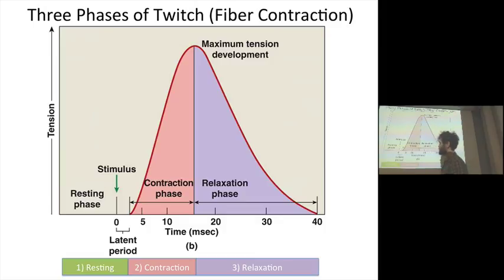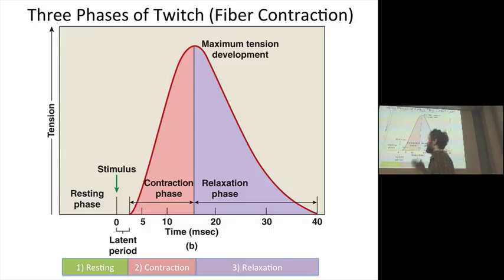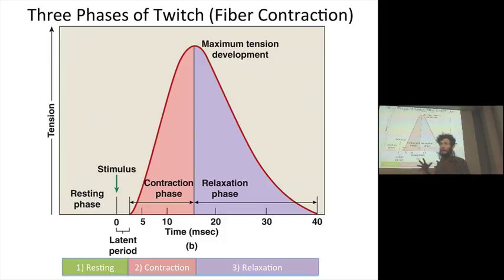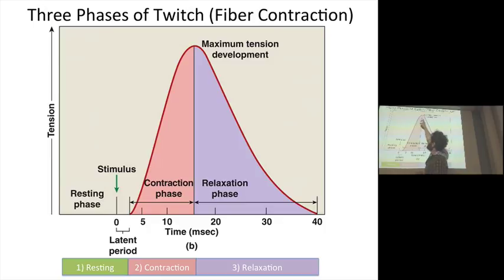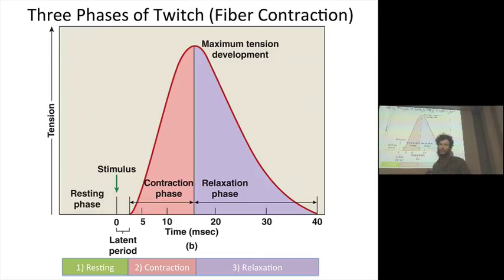Then we go into the contraction phase: cross-bridge formation, contraction cycle, release, again and again, until the neural stimulus has abated, the acetylcholine has been recycled, membrane potential dynamics reset themselves, and consequently the calcium channels close in the sarcoplasmic reticulum. We enter the relaxation phase. We reach a maximum tension, then shift toward the relaxation phase as calcium begins to be re-sequestered and the tension releases. That's a single twitch.